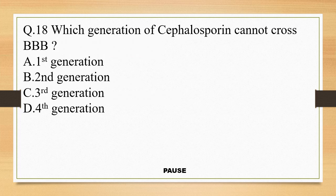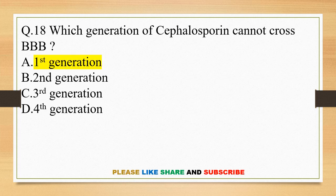Question 18. Which generation of cephalosporin cannot cross the blood-brain barrier? Option A, first generation; option B, second generation; option C, third generation; and option D, fourth generation. And the right answer is option A, first generation.